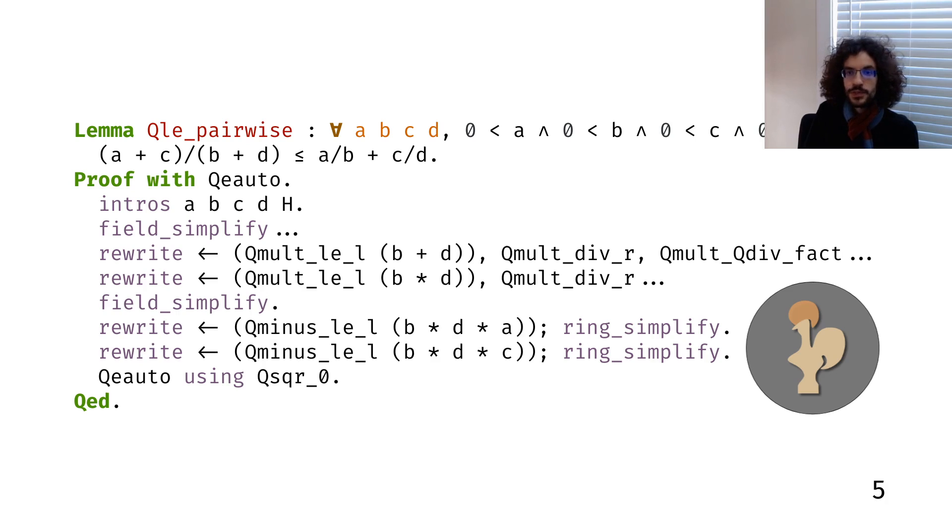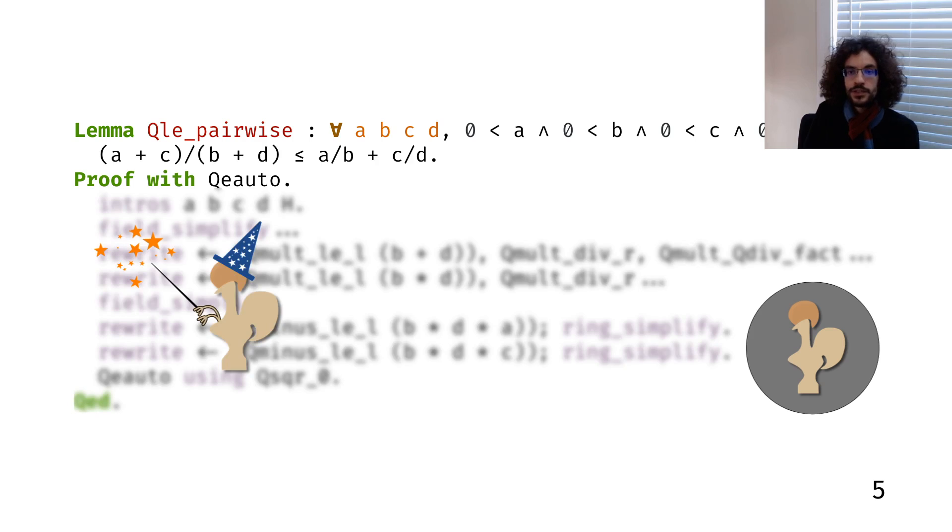In many cases, we don't care why a theorem is true, so it does not matter that the proof script is inscrutable. Maybe I'm proving that a particular program does not perform out-of-bound array accesses, for example, and it's enough for me to know that the theorem holds. In those cases, if Coq is happy, then I'm happy too.